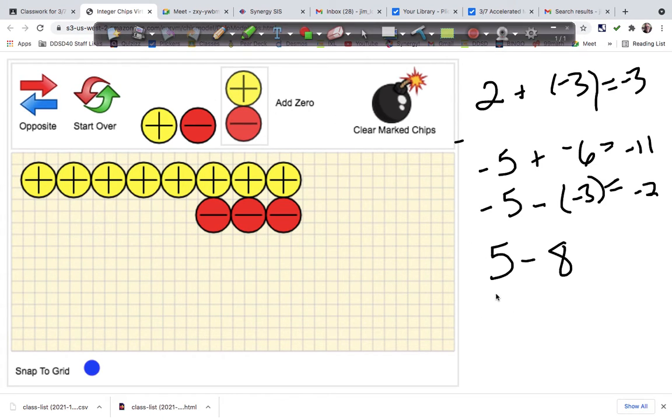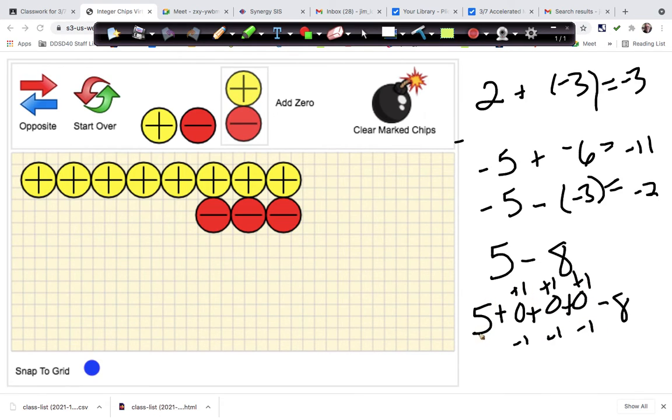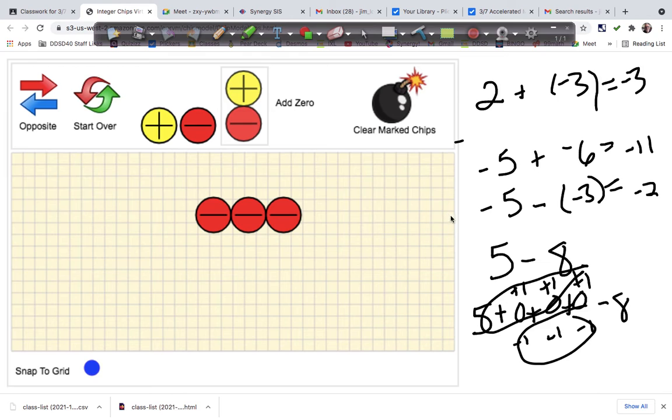And then we're going to subtract eight. We're going to split these into a plus one minus one plus one minus one plus one minus one. And now we can remove all these and these are remaining. So here's what it looks like right here. I'm going to remove eight positives. And the answer is negative three.